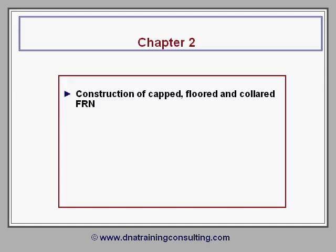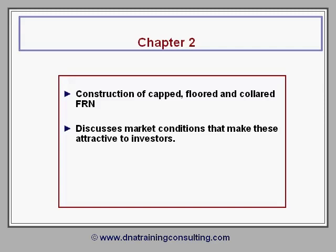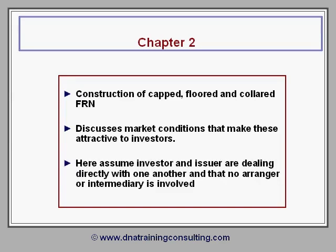This Chapter 2 illustrates the construction of a capped, floored, and colored FRN, and also discusses the market conditions that make each of these particularly attractive to investors. The examples in this chapter assume the investor and the issuer are dealing directly with one another, and that no arranger or intermediary is involved. In Chapter 3 we will reflect the more realistic situation in which an arranger brings the two parties together and assists in the structuring of the transaction.